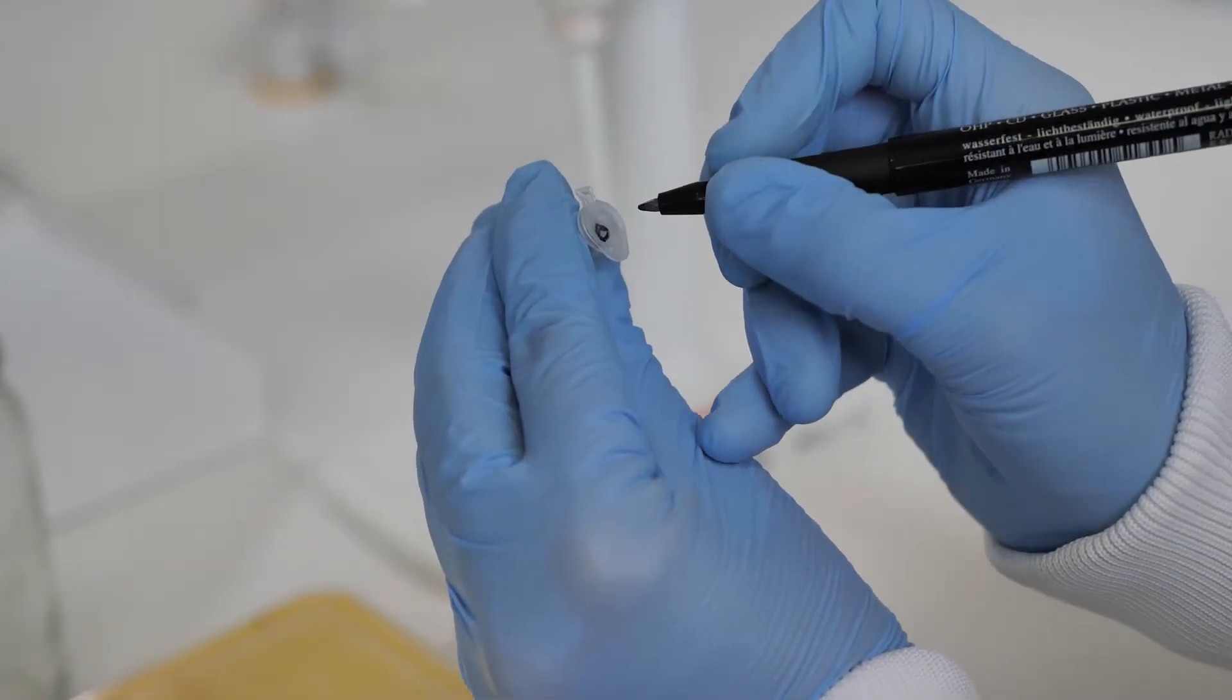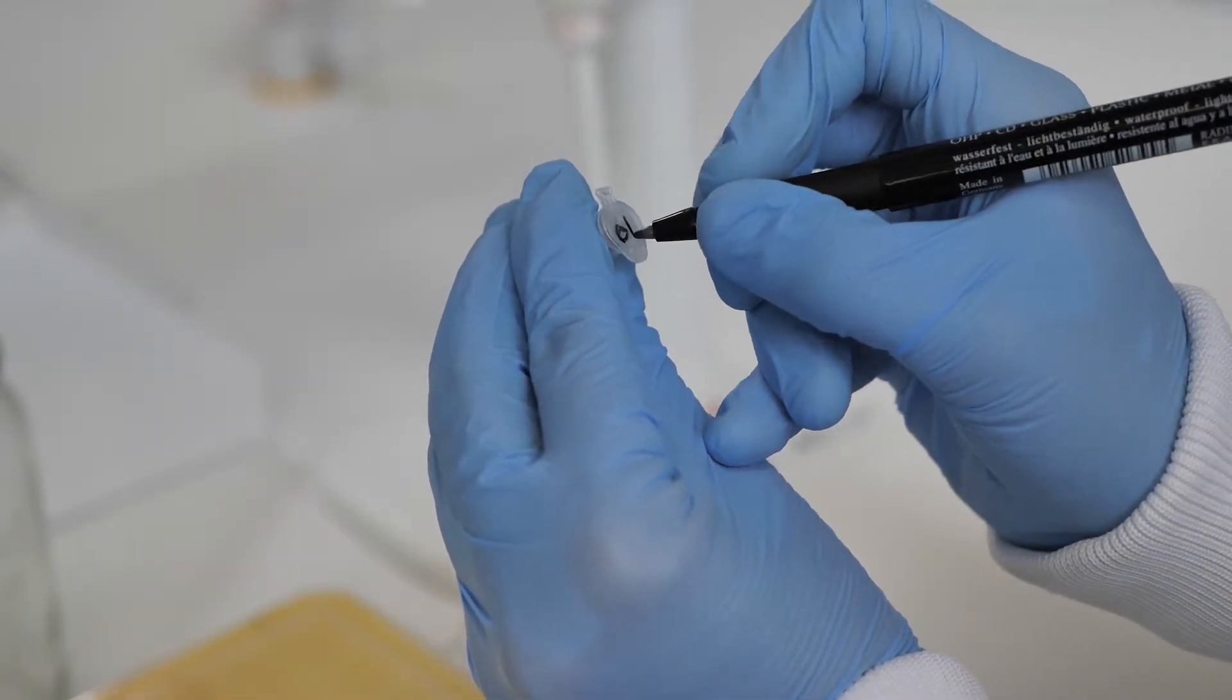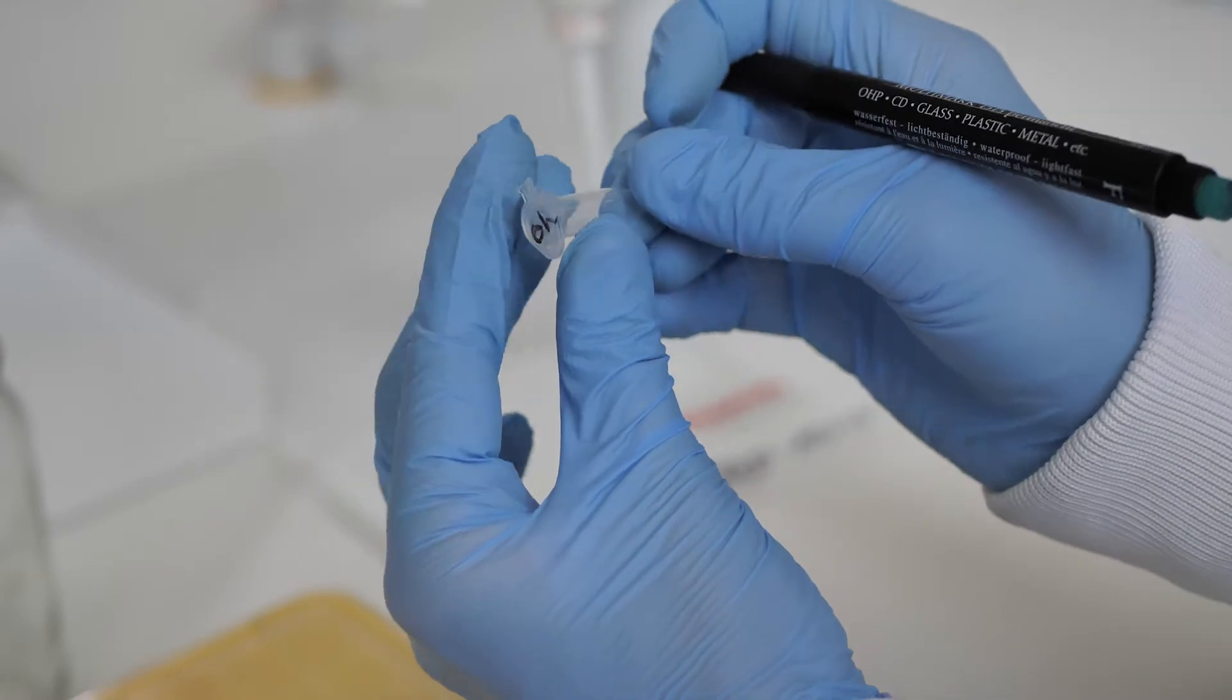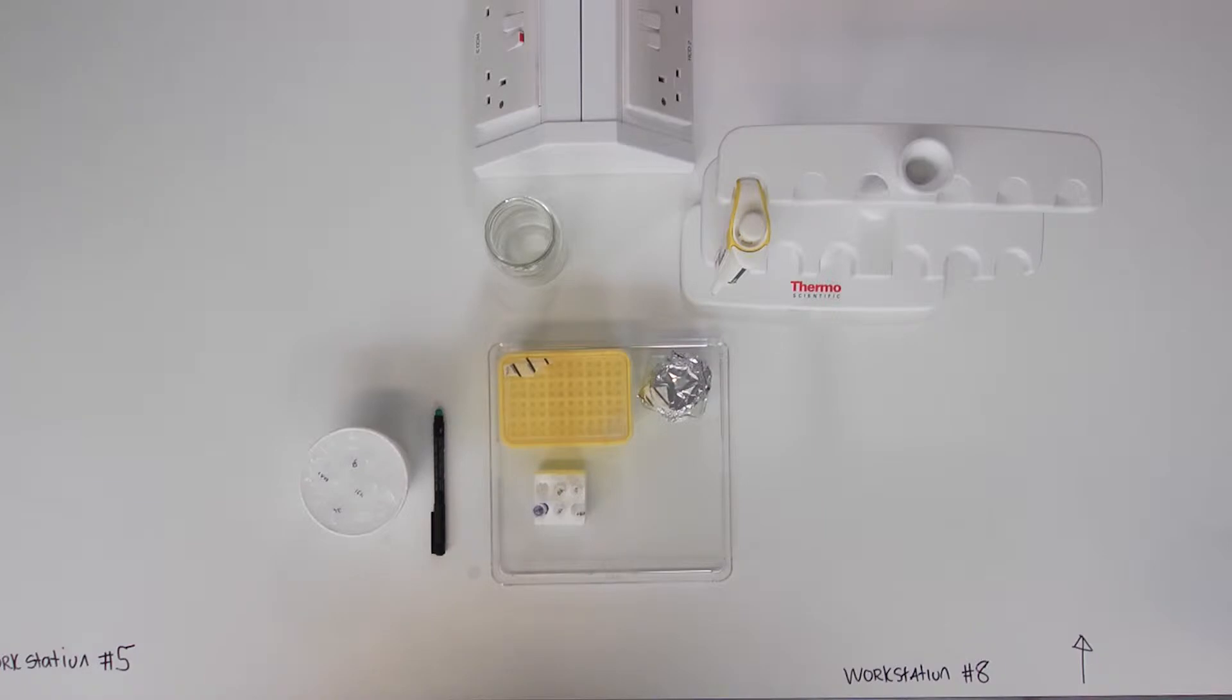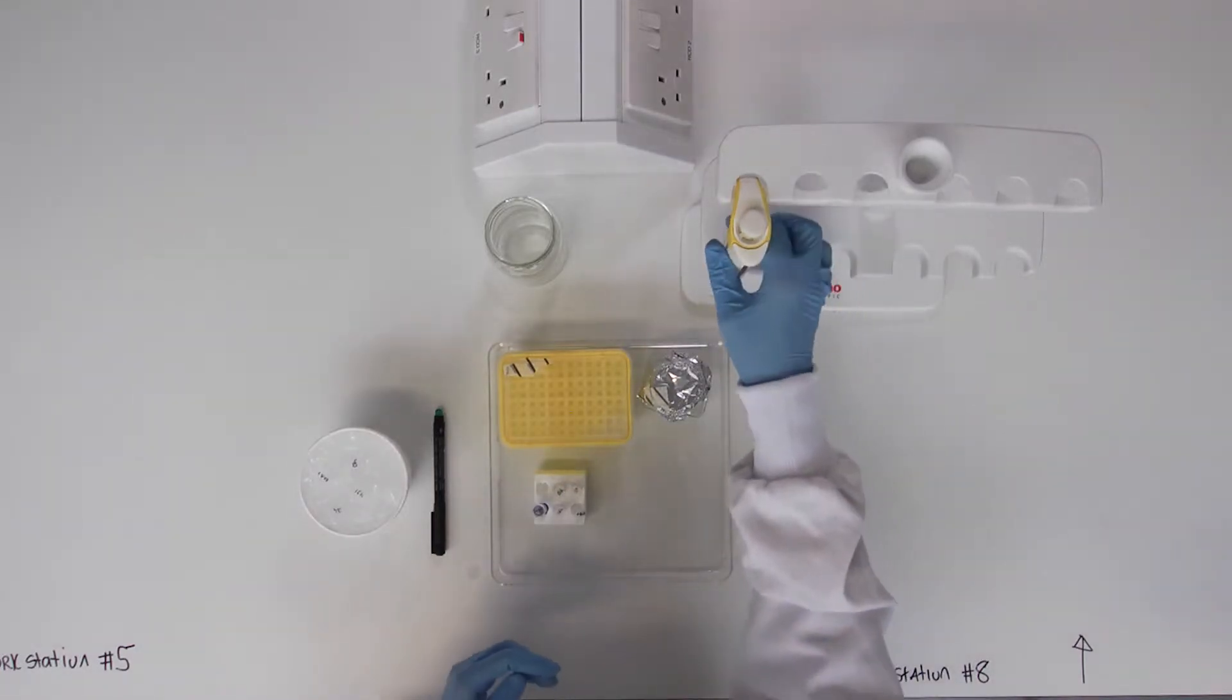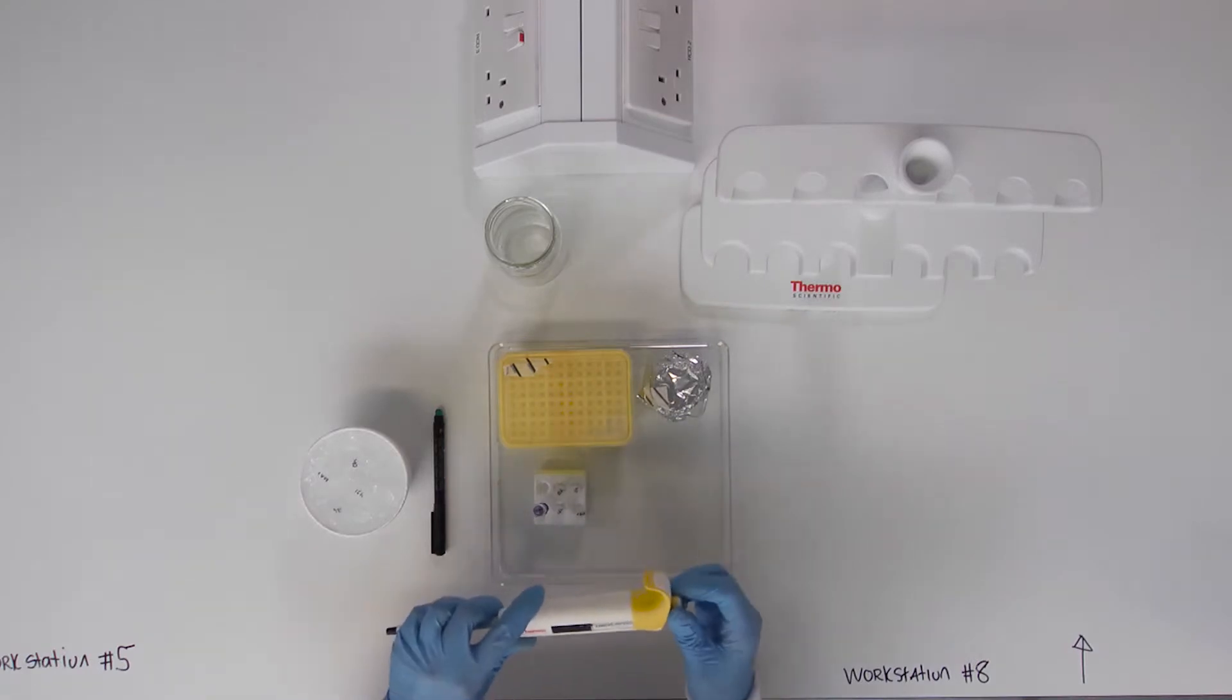Label fresh tubes for each time point and the standard and include a group identifier or initials. Pipette an equal volume of the cell solution and reducing buffer into each respective tube.